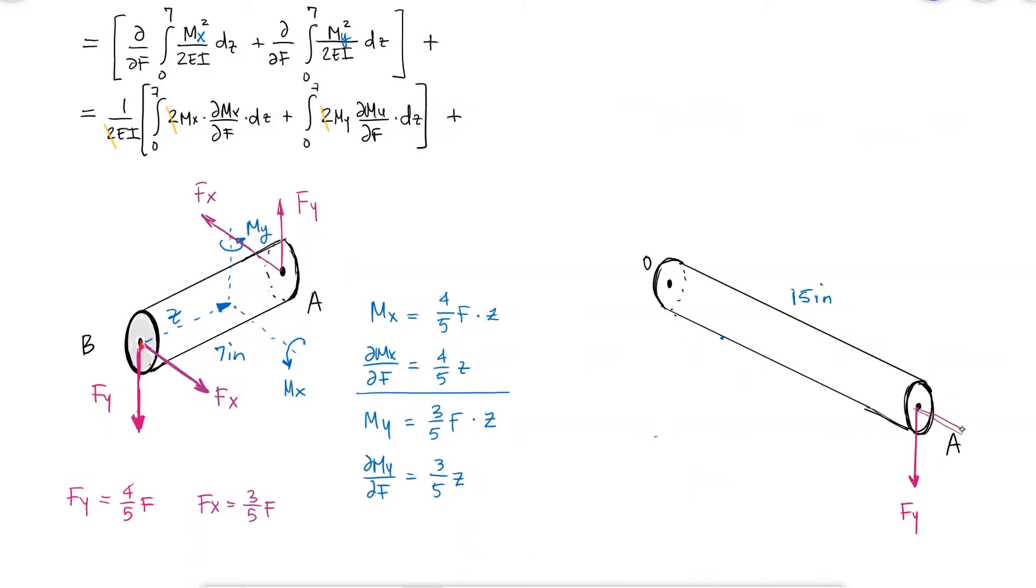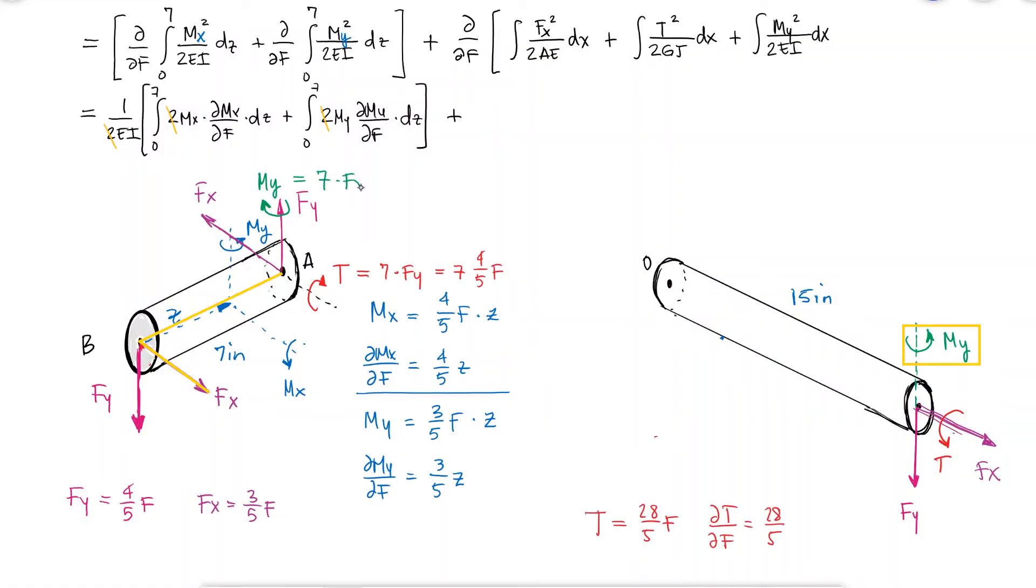The internal loads at A, which are the reactions to the reactions of section AB, help us identify that the strain energy inside AO comes from an axial load Fx, torsion from a torque T that does not vary along the x-axis, bending from the moment My that doesn't vary along the x-axis either, and bending from a moment Mz caused by force Fy.